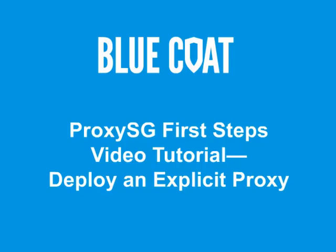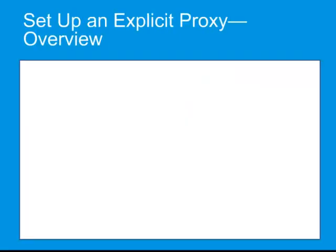Welcome to Bluecoat's computer-based training. This first steps video tutorial describes how to deploy the ProxySG in explicit proxy mode. To set up your network for an explicit proxy, configure the SSL proxy service if required, and then select one or more methods to deploy proxy settings to the users in your network.